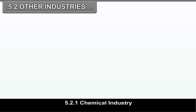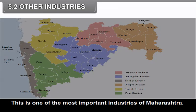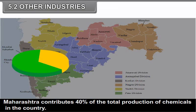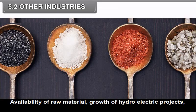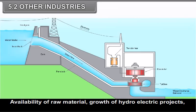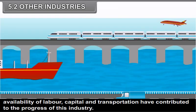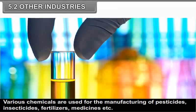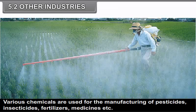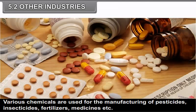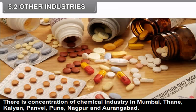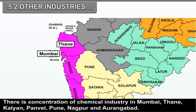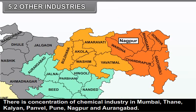Chemical industry is one of the most important industries of Maharashtra. Maharashtra contributes 40% of the total production of chemicals in the country. Availability of raw material, growth of hydroelectric projects, availability of labor, capital and transportation have contributed to the progress of this industry. Various chemicals are used for the manufacturing of pesticides, insecticides, fertilizers, medicines, etc. There is a concentration of chemical industry in Mumbai, Thane, Kalyan, Panvel, Pune, Nagpur and Aurangabad.